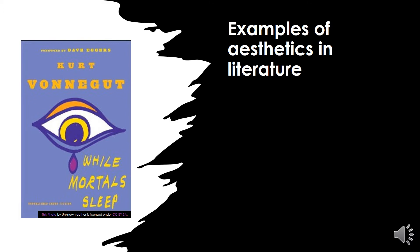Another example of aesthetics in literature is the modern short story. In the modern short story, the structure is character driven. The setting influences the characters — where and when the story takes place determines the different factors that make the character what they are. Symbolism reflects the character and theme. Point of view connects the reader in a natural and realistic manner to the subject of the story. Also, word choice is purposeful, reflecting a specific tone. By knowing these specific elements, we can better understand the story and appreciate the point the author is trying to make.